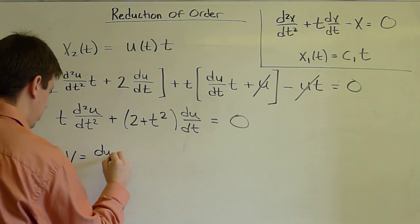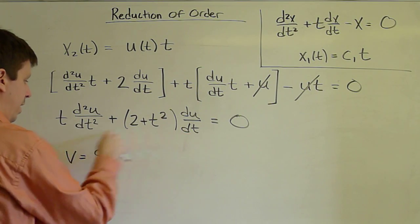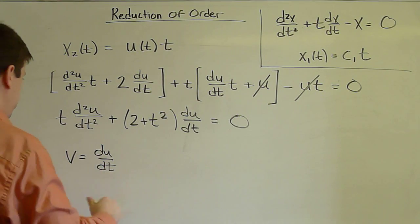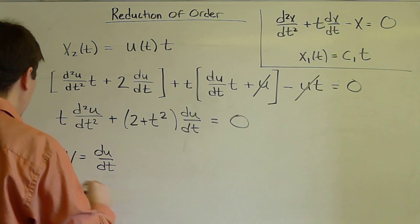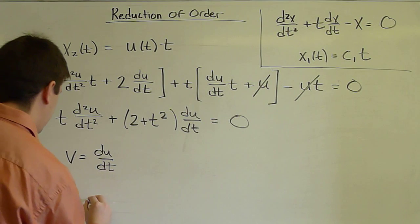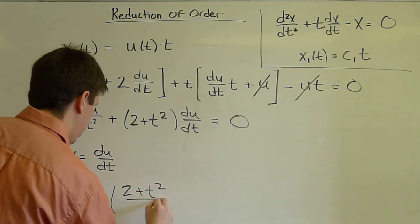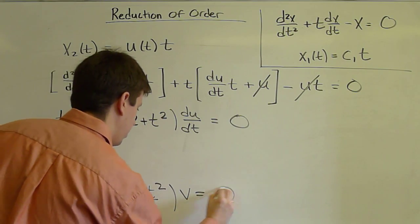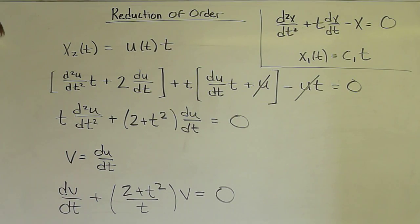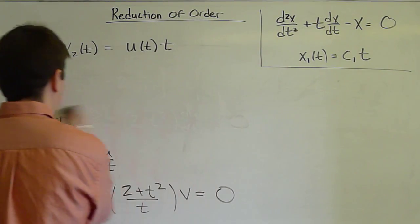And then this is just v. And this is the time derivative of v. So let's write it that way and also divide through by t. We get dv/dt plus (2 + t²)/t v equals zero. So this is a first order ODE that we can solve using our methods from first order ODEs.